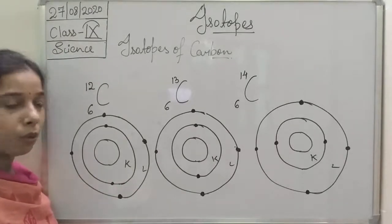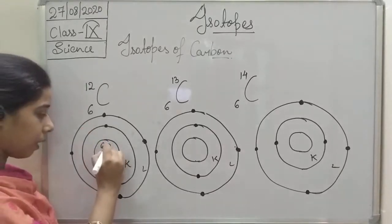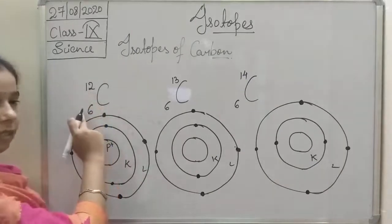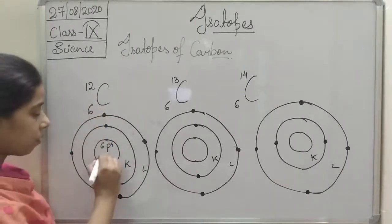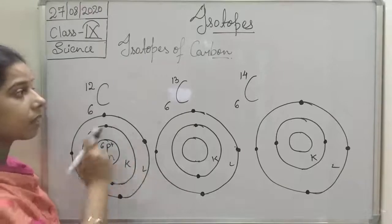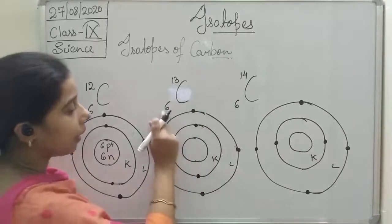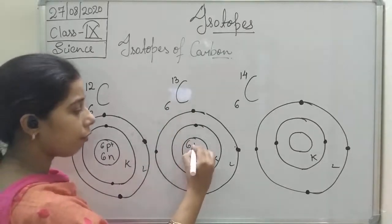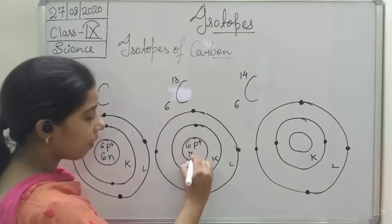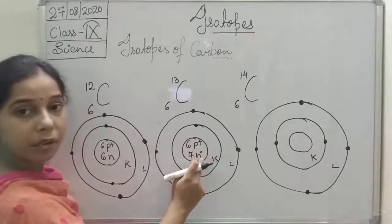Now we see the number of neutrons. For carbon-12, since the atomic number is 6, number of neutrons is 6. There are 6 protons and 6 neutrons. For carbon-13, 6 protons are there but 13 minus 6 gives 7 neutrons. So 6 protons and 7 neutrons.